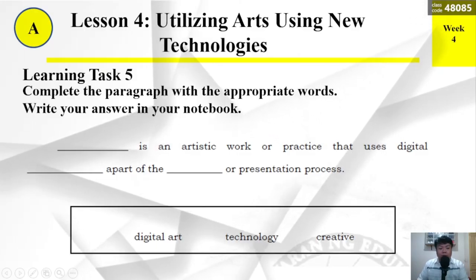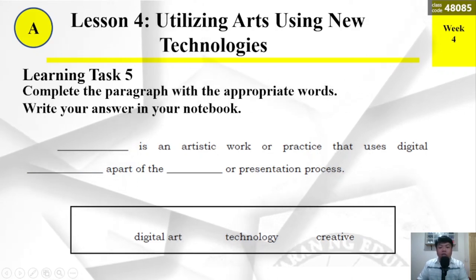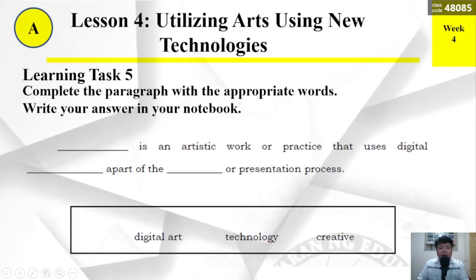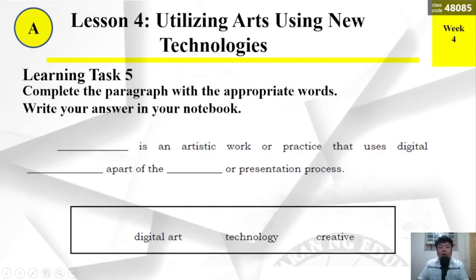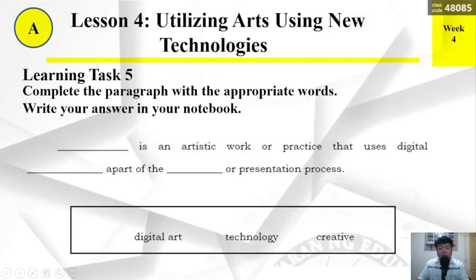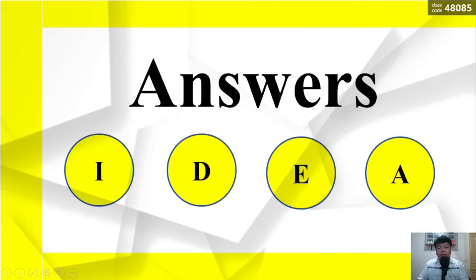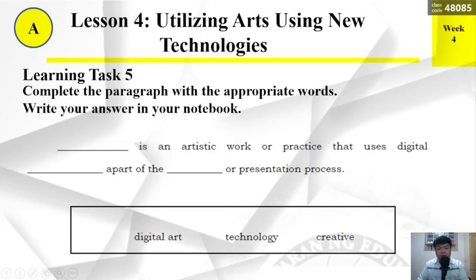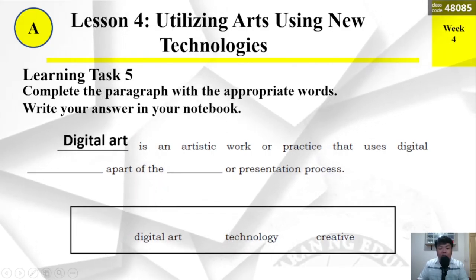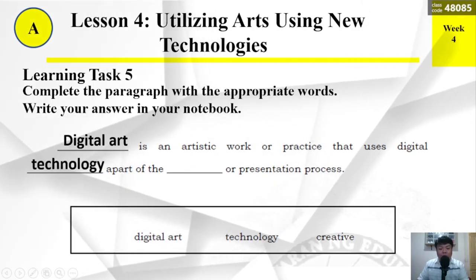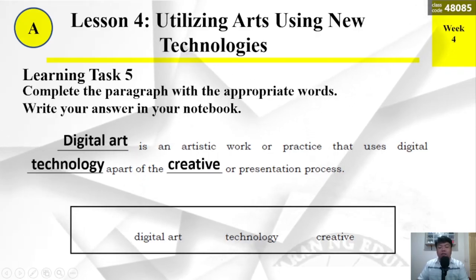Learning Task Number 5: Complete the paragraph with the appropriate words. Write your answer in your notebook. Blank is an artistic work or practice that uses digital blank as part of the blank or presentation process. The choices are: Digital art, Technology, Creative. The correct answer: Digital art is an artistic work or practice that uses digital technology as part of the creative or presentation process.